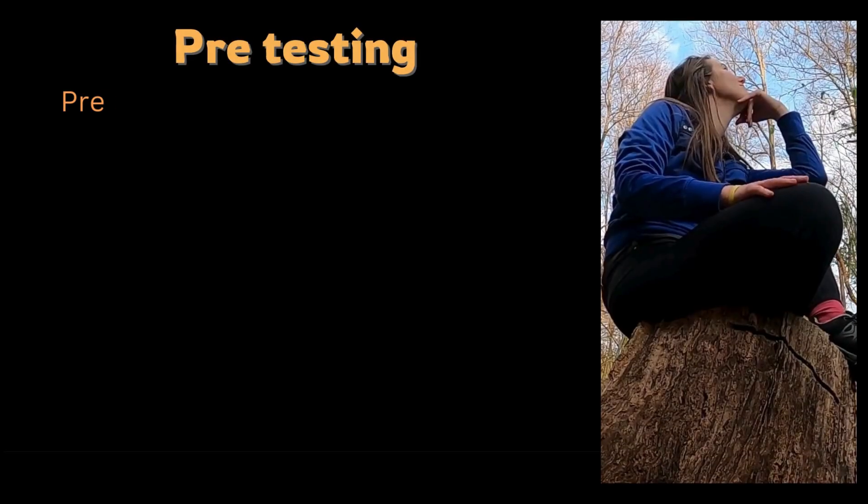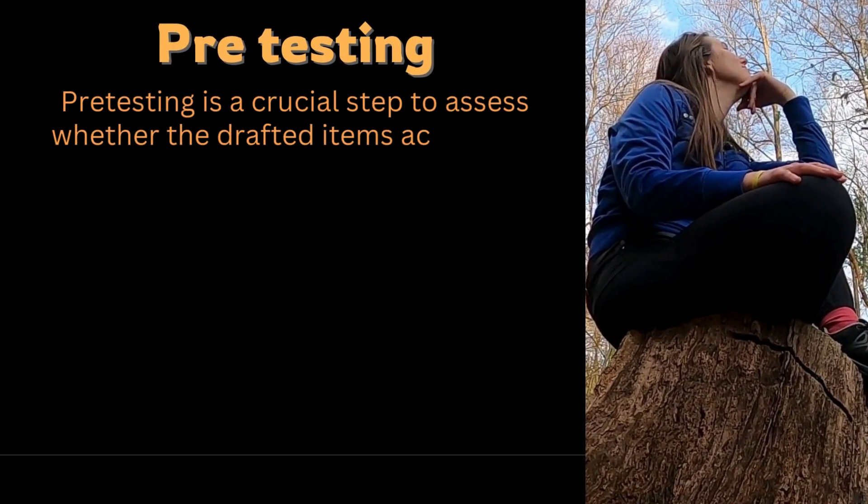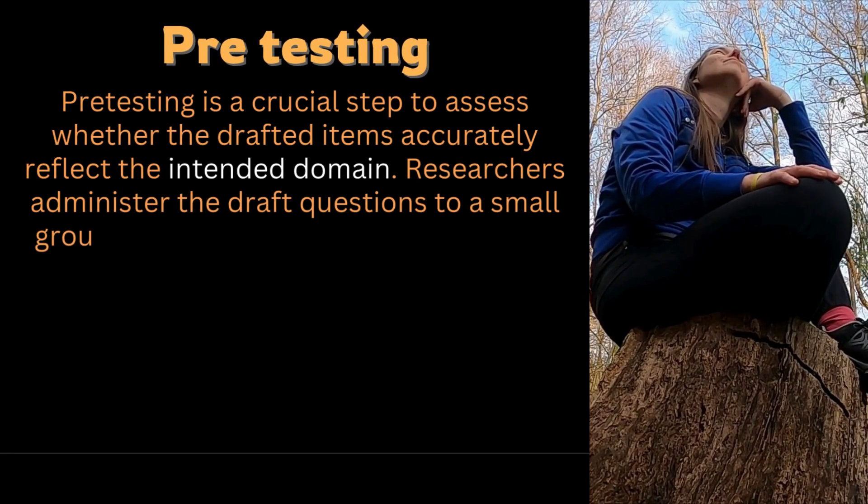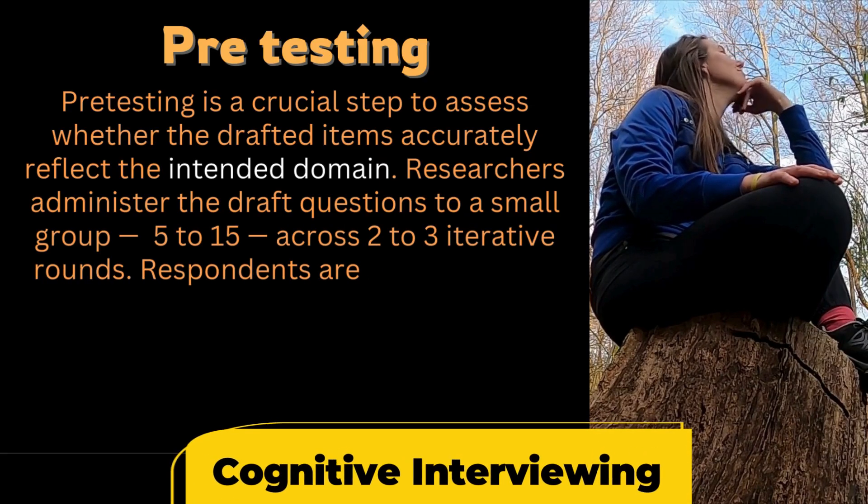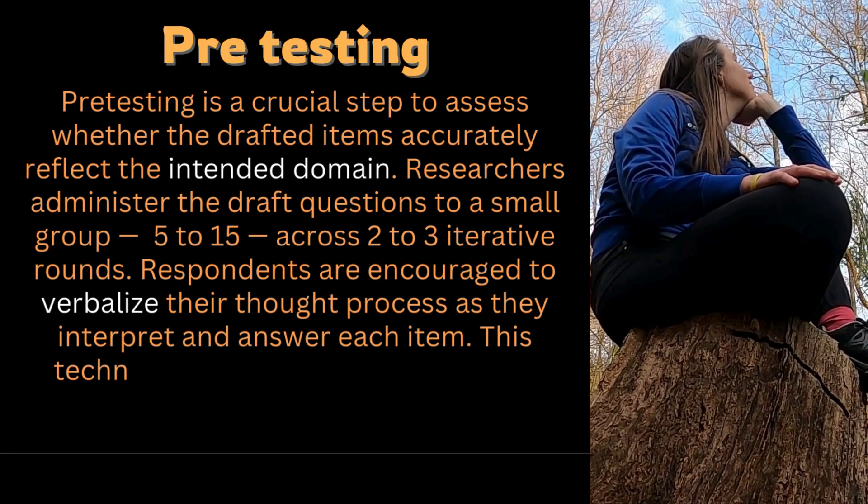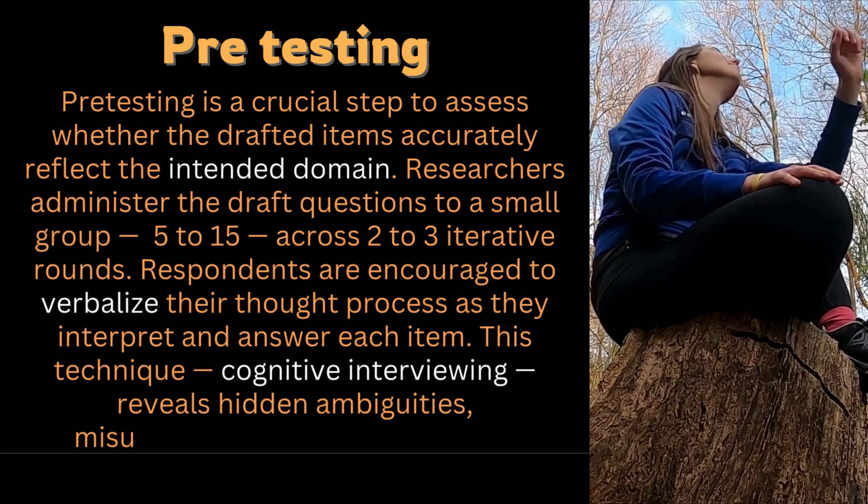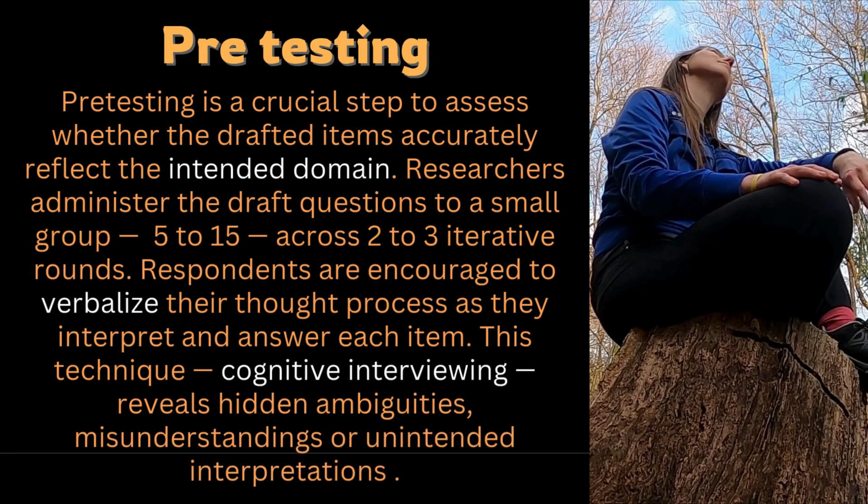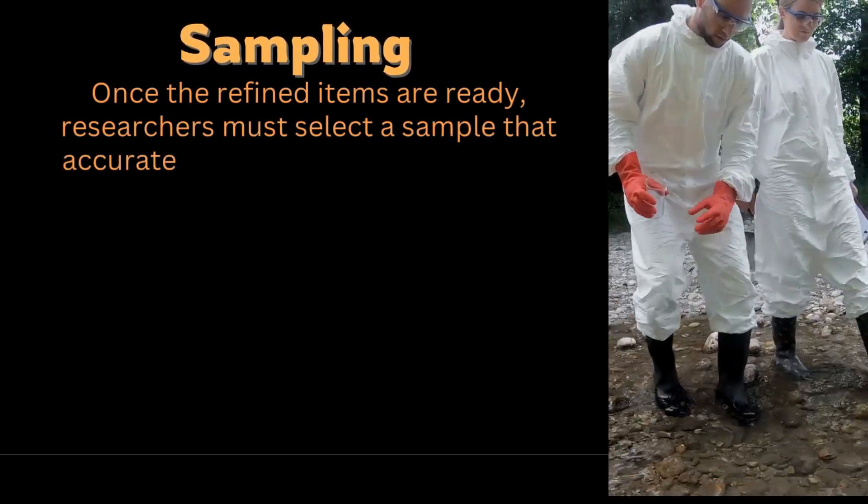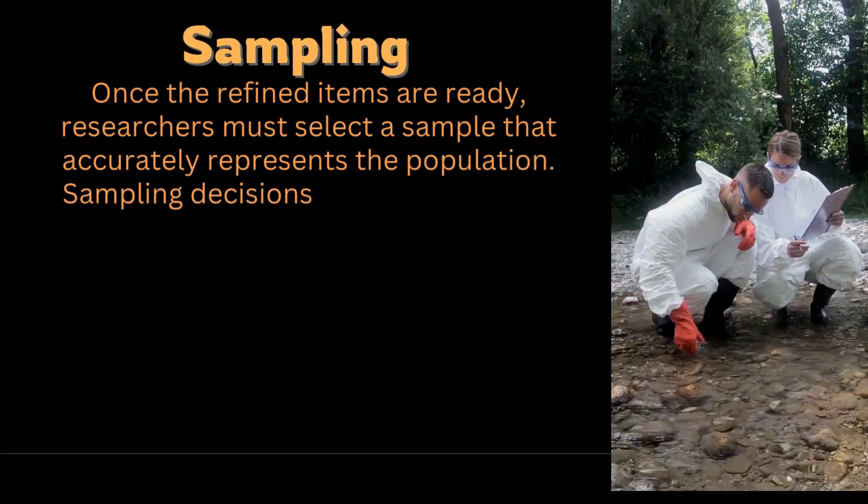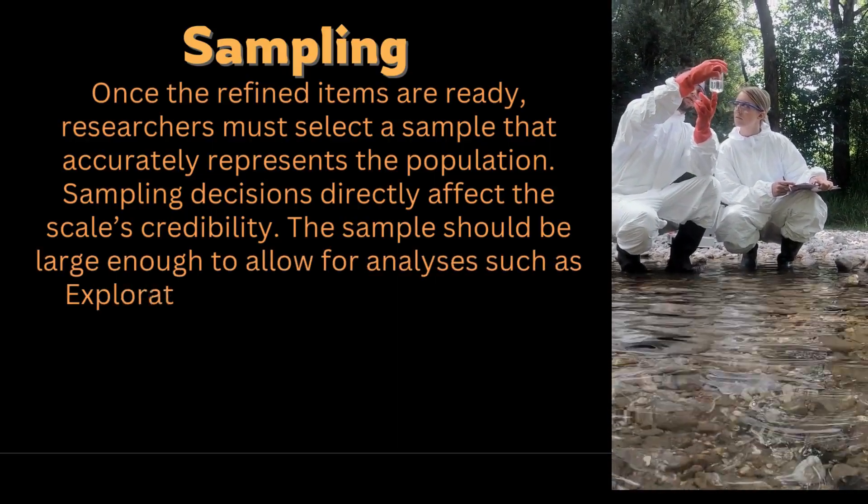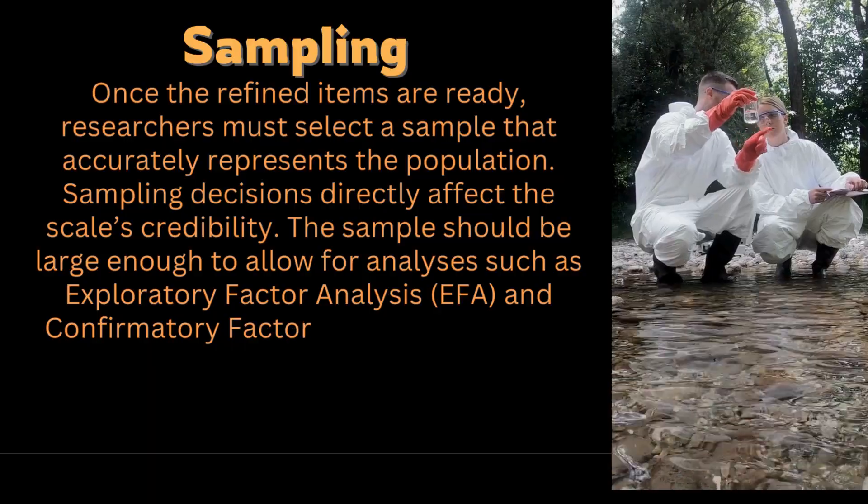Pre-testing is a crucial step to assess whether the drafted items accurately reflect the intended domain. Researchers administer the draft questions to a small group, 5 to 15, across 2 to 3 iterative rounds. Respondents are encouraged to verbalize their thought processes as they interpret and answer each item. This technique reveals hidden ambiguities, misunderstandings, or unintended interpretations. Once the refined items are ready, researchers must select a sample that accurately represents the population. Sampling decisions directly affect the scale's credibility.